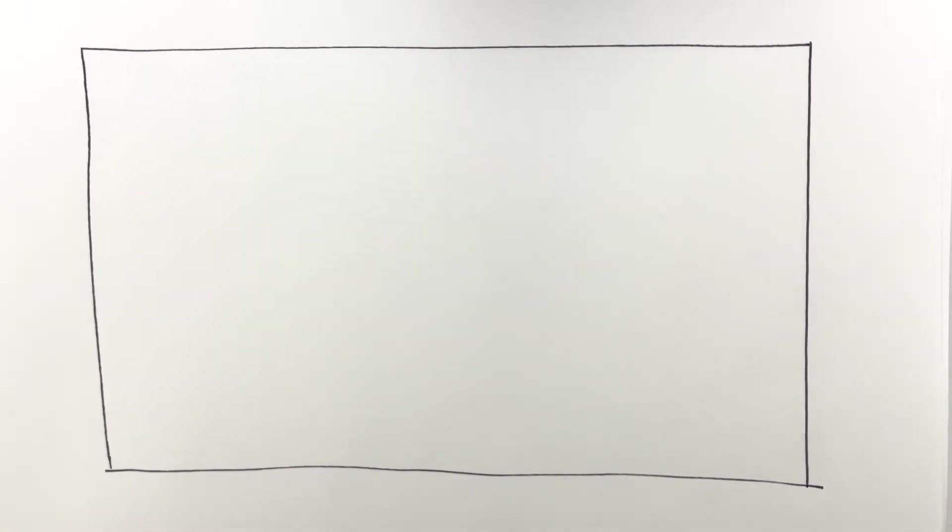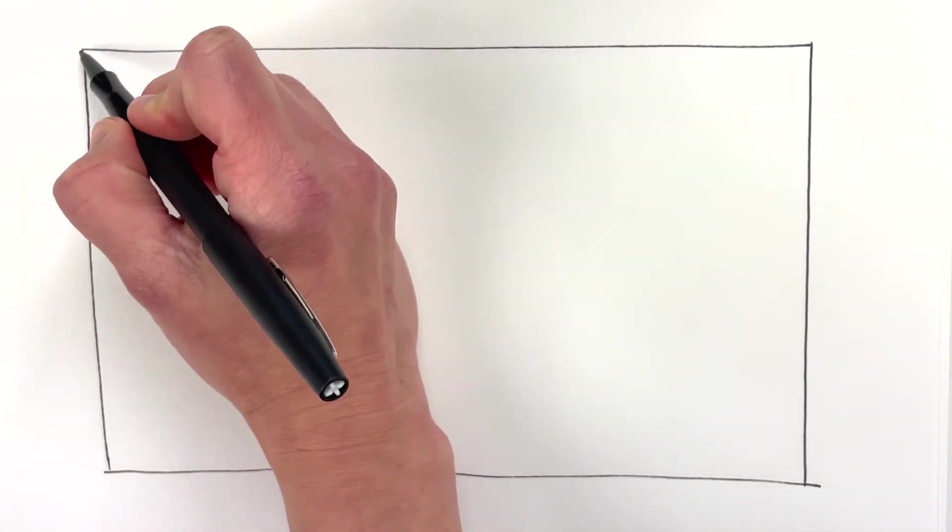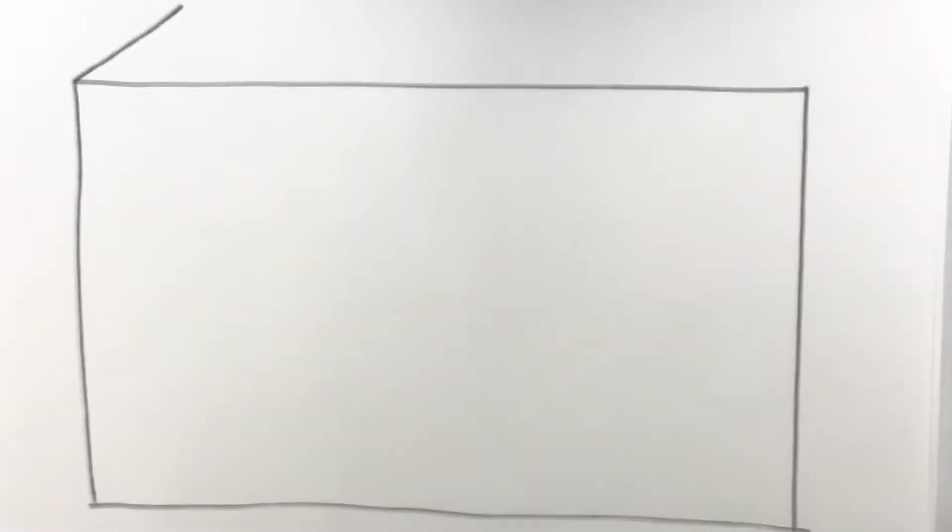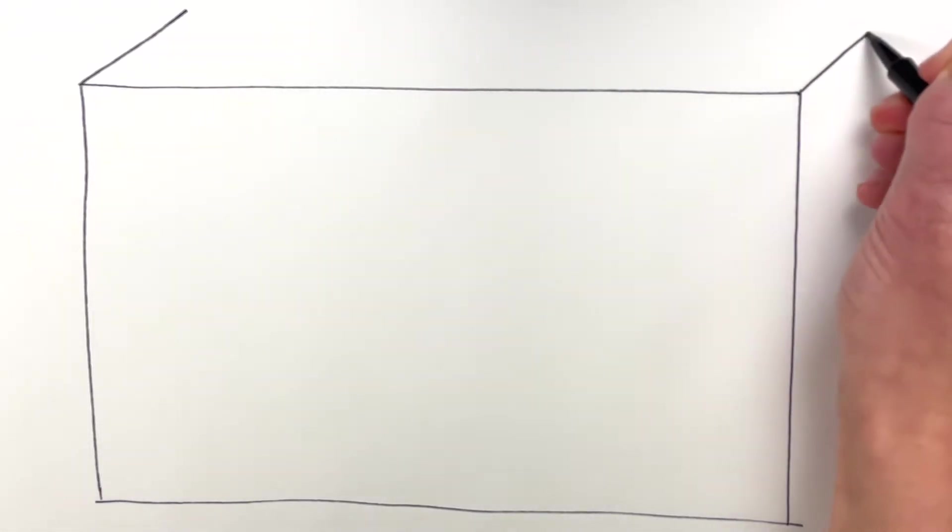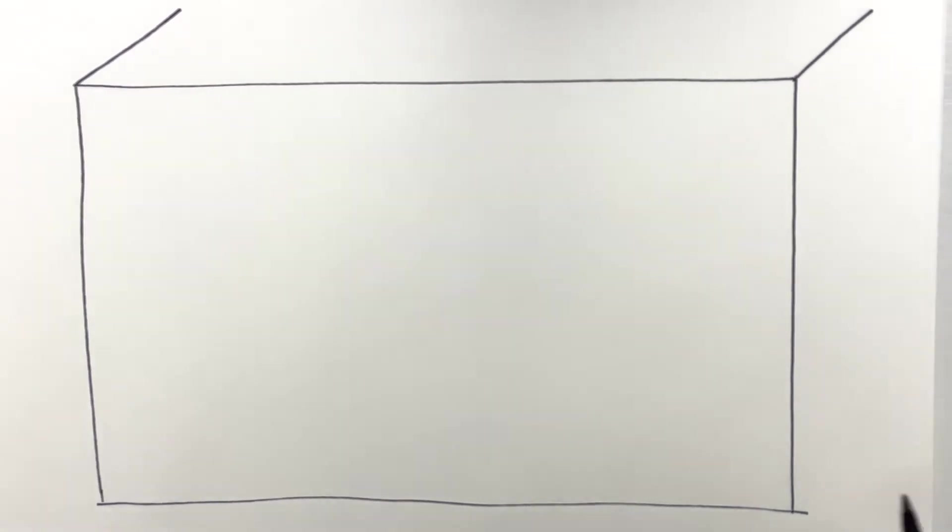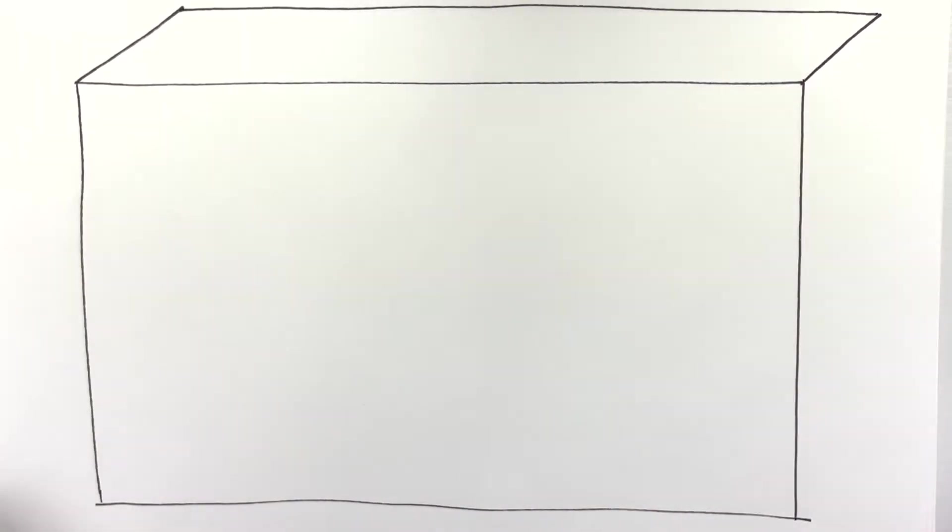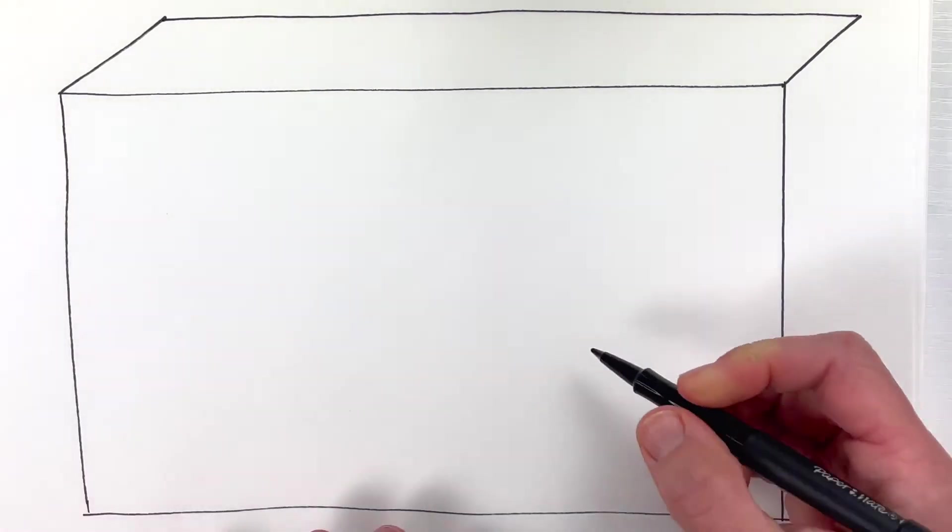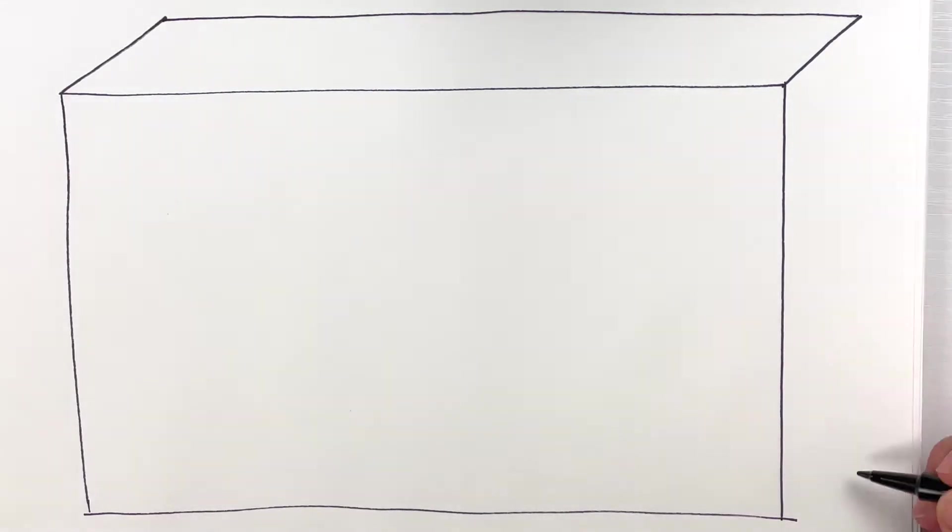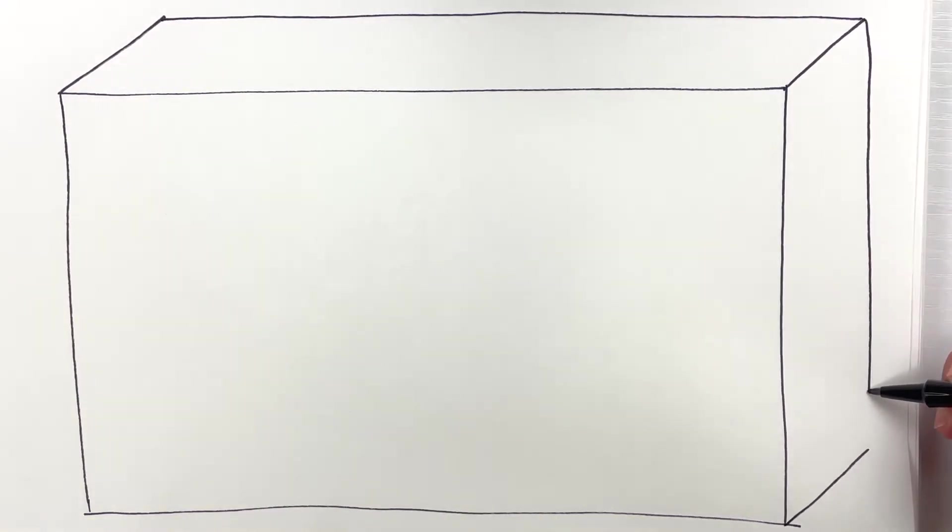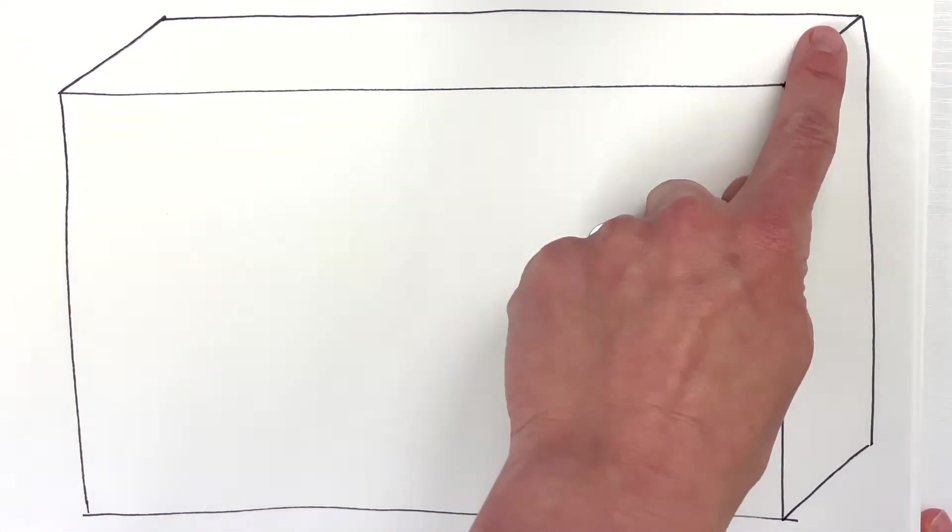Okay so I have this rectangle here and then to make it three-dimensional I'm gonna start at the left corner and make a little angled line like that and then I'll do the same thing on the right side and then I'll connect these two together like that and then I will put one over here on this side and bring that wall of the fish tank all the way down.